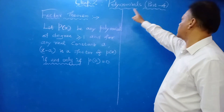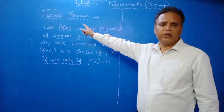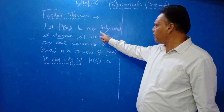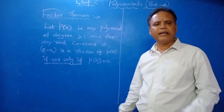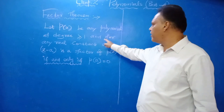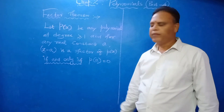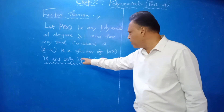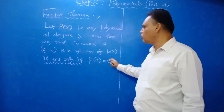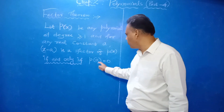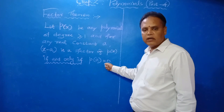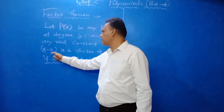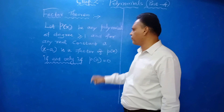In part 4 chapter 2 on polynomials, you will see the factor theorem. What is the factor theorem? Let P of X be any polynomial of degree greater than or equal to 1, and for any real constant A, the linear polynomial X minus A is a factor of P of X if and only if P of A equals 0. That means the value of the polynomial will be 0, and then we can say X minus A is a factor of P of X.